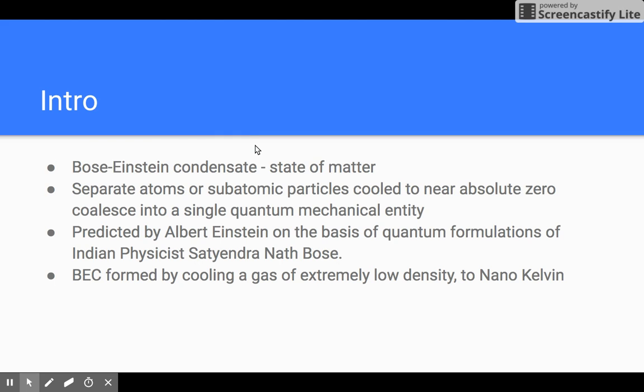Bose-Einstein condensate is a state of matter in which separate atoms or subatomic particles cooled to near absolute zero coalesce into a single quantum mechanical entity. This form of matter was predicted in 1924 by Albert Einstein on the basis of quantum formulations of Indian physicist Satyendra Nath Bose.